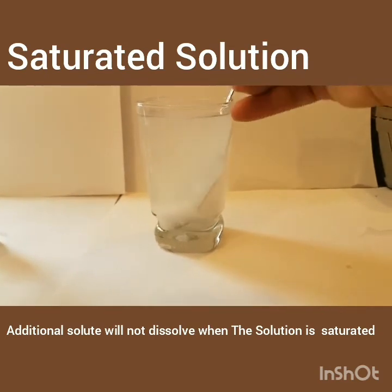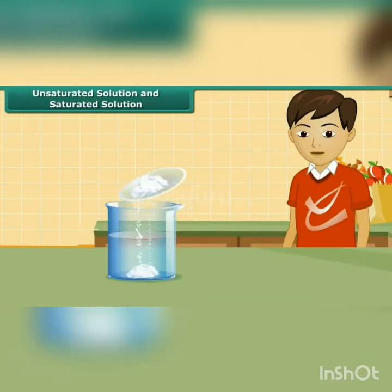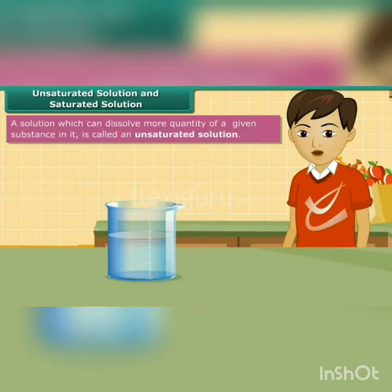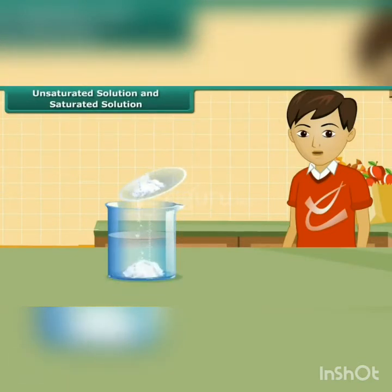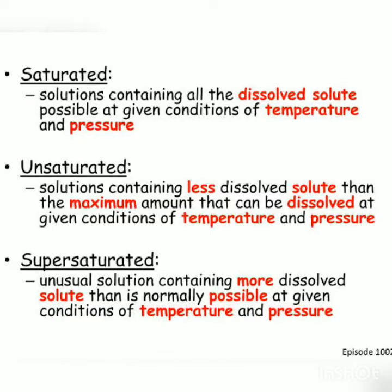Let us now do another workout. Take a beaker and dissolve some amount of salt in it. Keep adding salt — as long as it dissolves, the solution is unsaturated. A stage will come when you cannot dissolve more salt; at that stage, the solution becomes saturated. A solution is said to be saturated if it cannot dissolve any more of the given substance. There is one more type of solution known as supersaturated, which contains more dissolved solute than is normally possible at a given temperature and pressure.